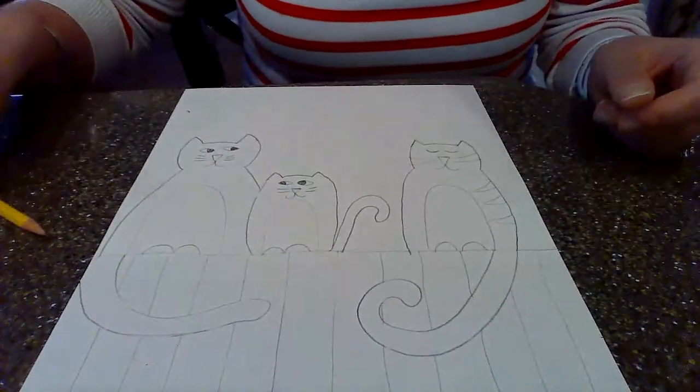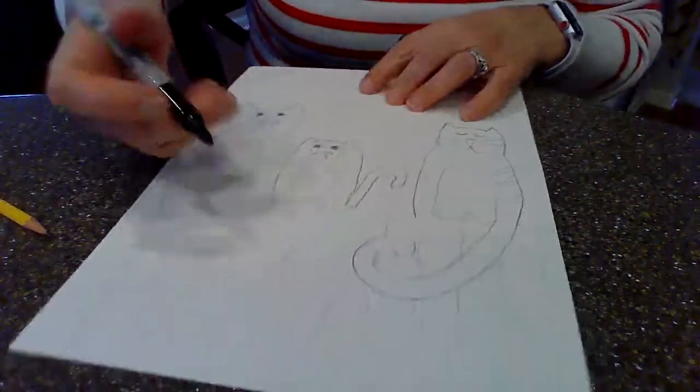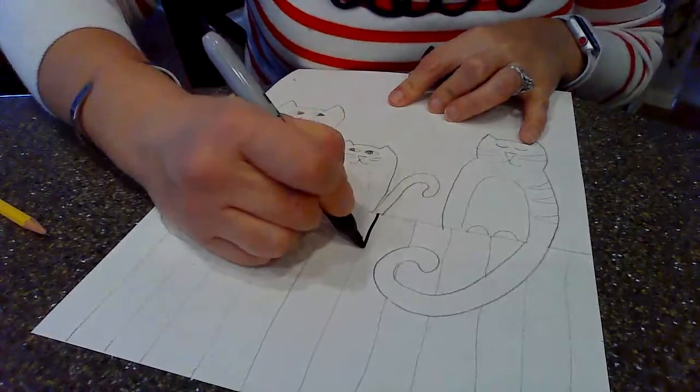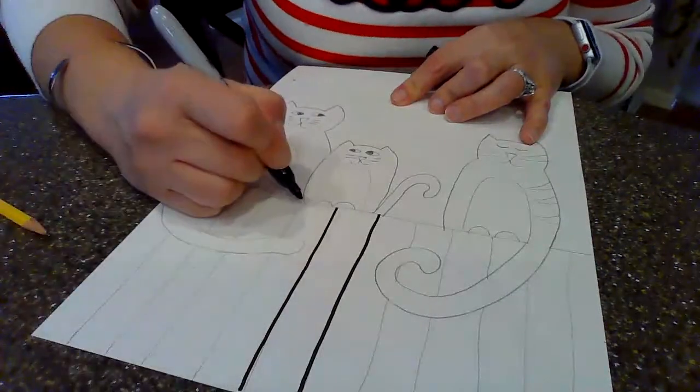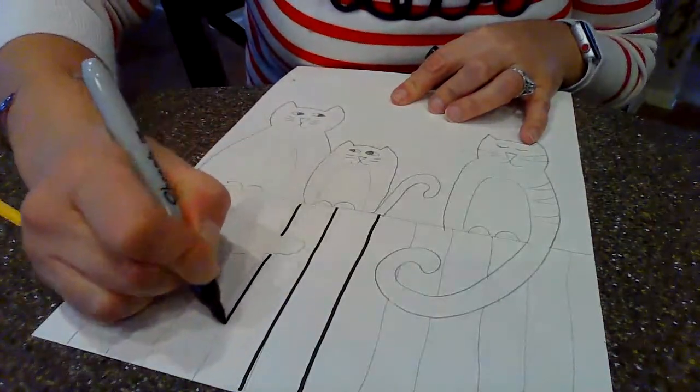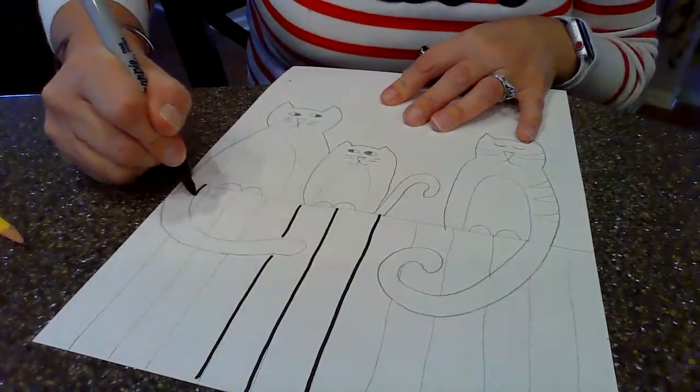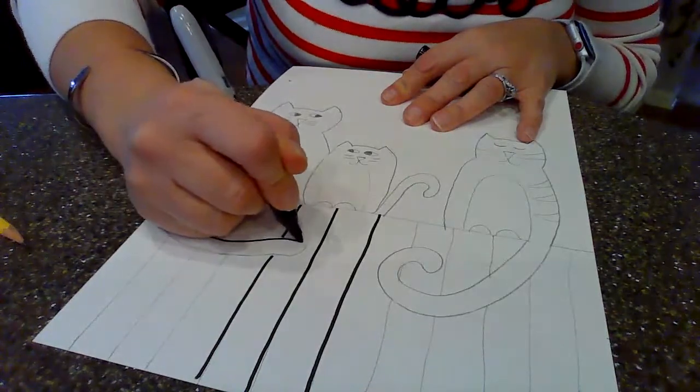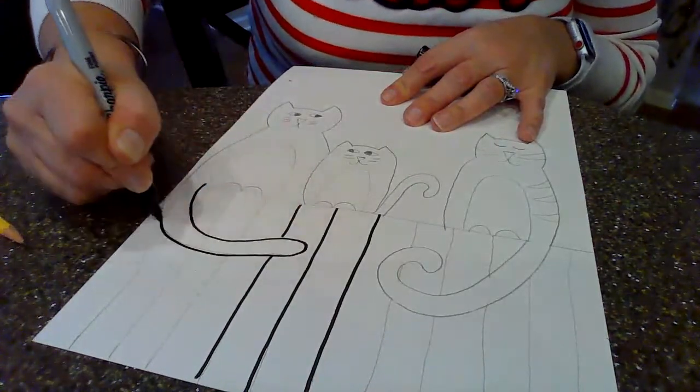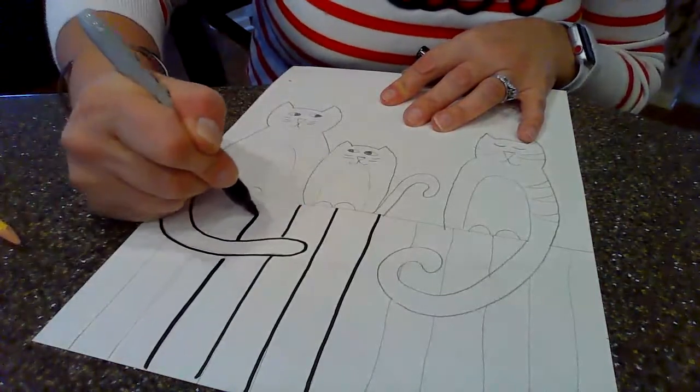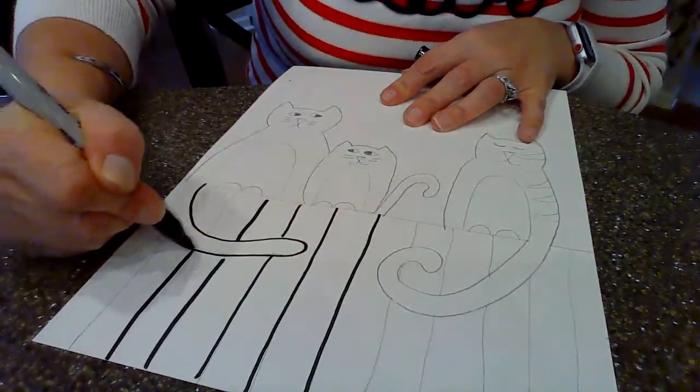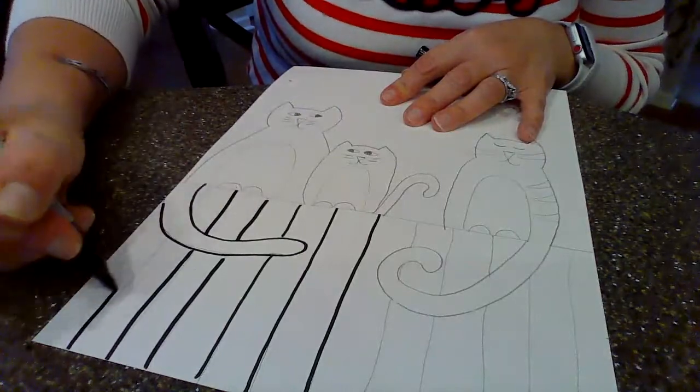As soon as you are done with your pencil, you're going to go ahead and Sharpie all over all of those lines. Do make sure you have erased any lines that you no longer need. So when that cat's tail goes in front of the fence, I don't see any of those vertical lines. We don't want our cat's tail to look see-through.